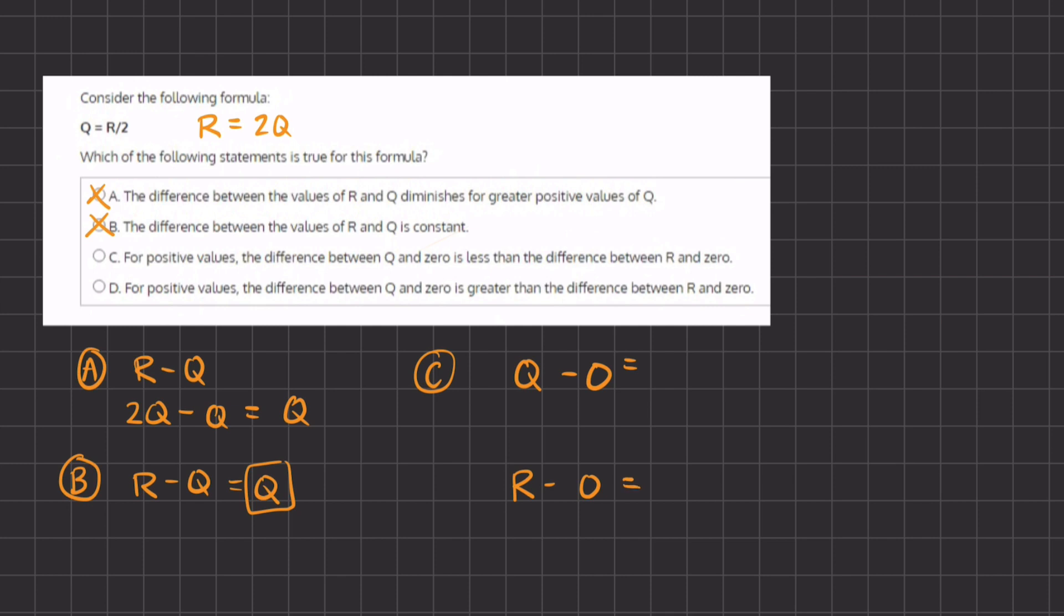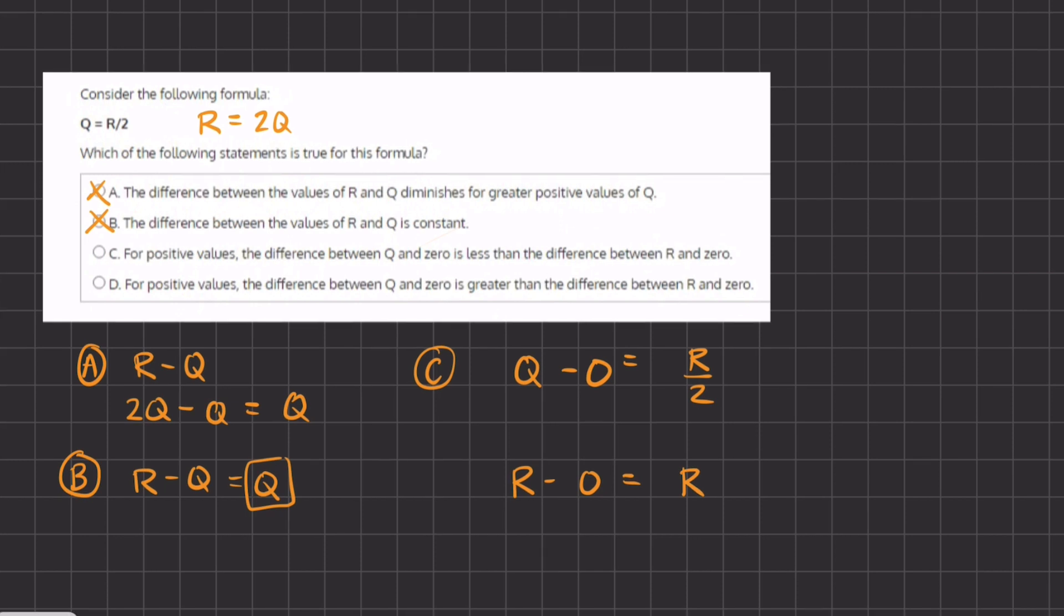Let's take a look. We know that Q minus 0 gives us Q, and we know that Q equals R divided by 2. Now R minus 0 gives us R.